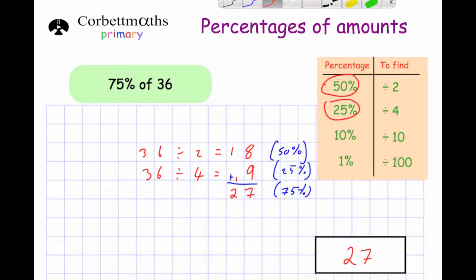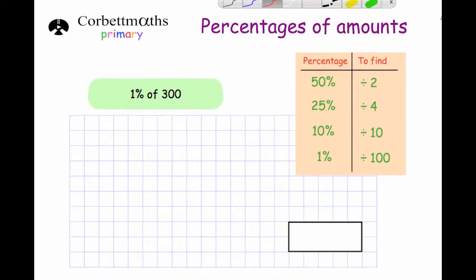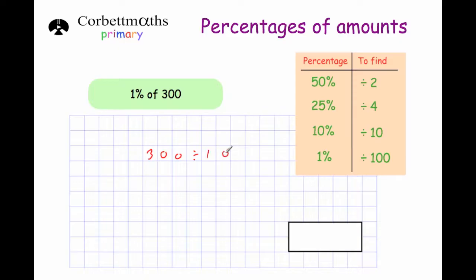Our next question says: work out 1% of 300. To find 1% we divide by 100, so 300 ÷ 100 = 3. So 1% of 300 is 3.